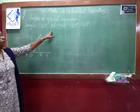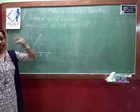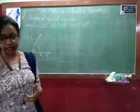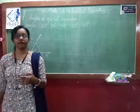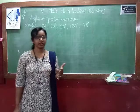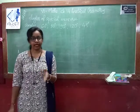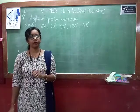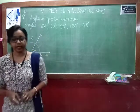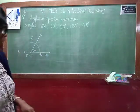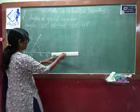Now we want to construct a 30 degree angle. We know that 30 degrees is exactly half of 60 degrees, meaning first you have to construct 60 degrees and then bisect that angle so that you get a 30 degree angle. So again we draw the 60 degree angle first.